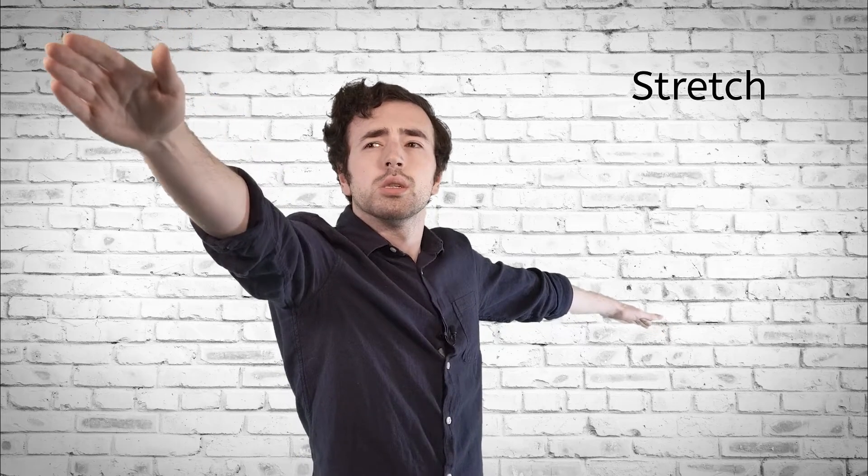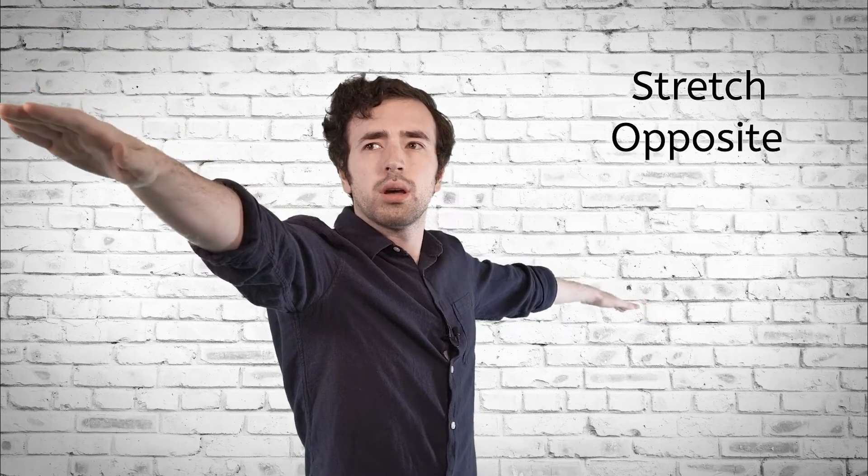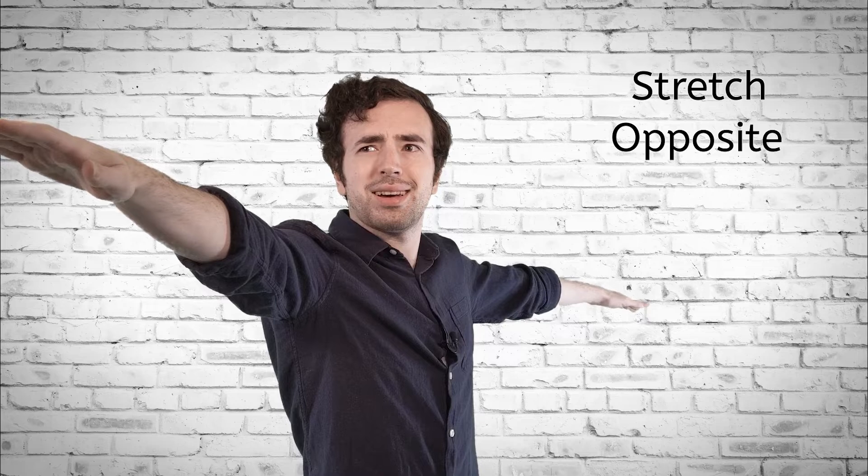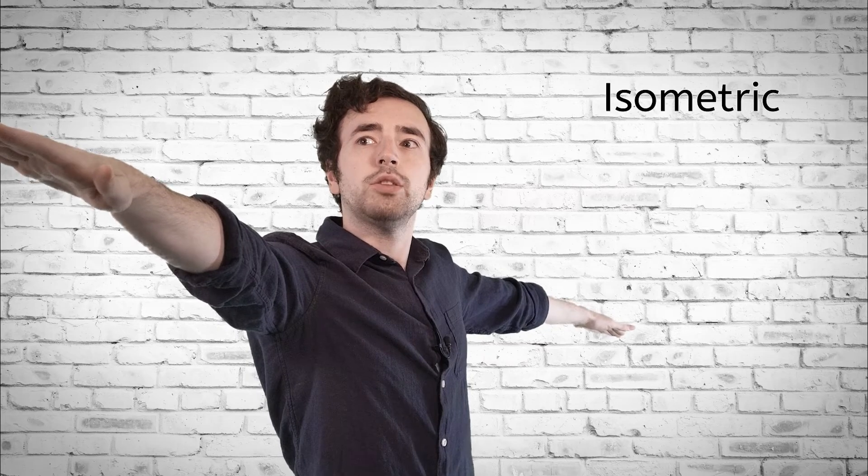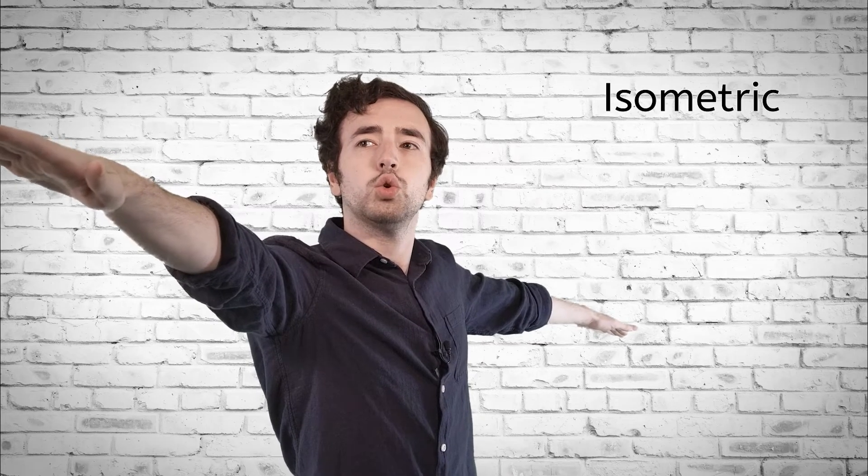away from the ears. Gently lower front arm and stretch fingertips in opposite directions. Opposite, stretch, opposite. Engage the abdomen and gluteus and breathe. Stay grounded, stay strong. We will stay in this isometric hold for a while. Isometric, isometric.